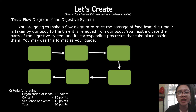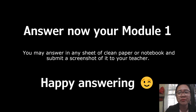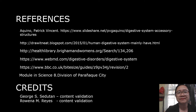Also answer the 'Let's Create' part of your module. Your task is to make a flow diagram of the digestive system, tracing the passageway of food from the time it is taken by our body to the time it is removed. Indicate the parts of the digestive system and the corresponding processes that take place inside them. You may use the provided format as your guide. Rubrics for grading: organization of ideas — 10 points, content — 10 points, sequence of events — 10 points, for a total of 30 points. You may answer on any clean sheet of paper or notebook and submit a screenshot of it to your teacher. Happy answering! Bye-bye.